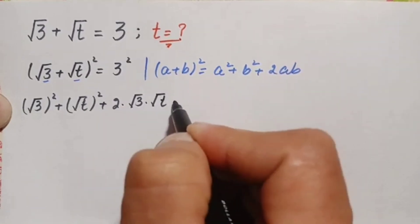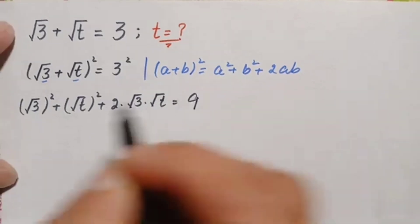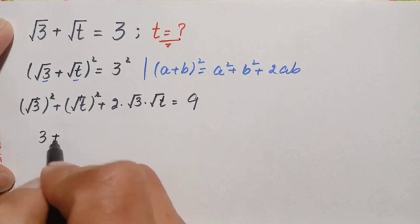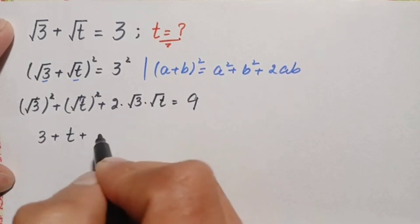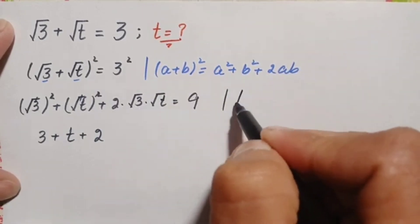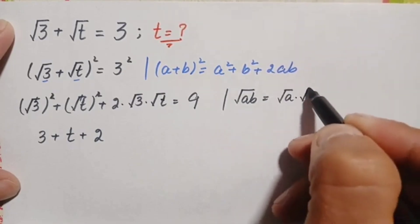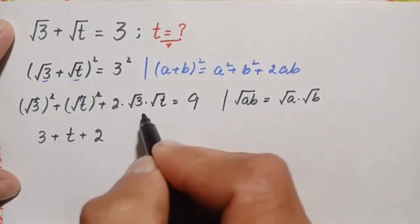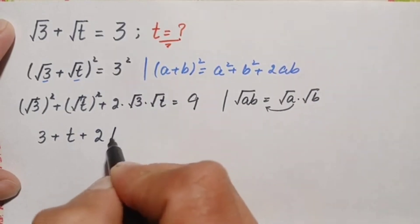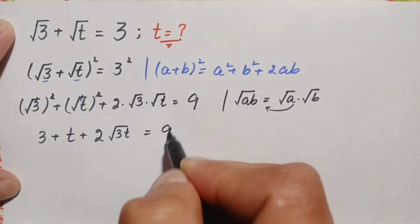So this equation will become: square root of 3 whole square, plus square root of t whole square, plus 2 times square root of 3 times square root of t, is equal to 9. The squares cancel, giving us 3 plus t plus 2 times square root of 3t, using the identity that square root of a times square root of b equals square root of ab, so this becomes 2 times square root of 3t, equal to 9.